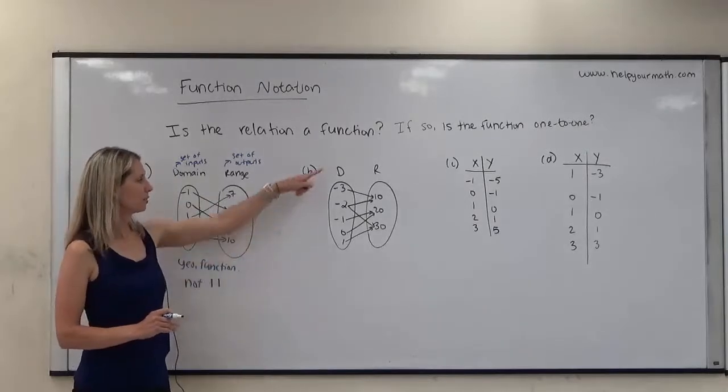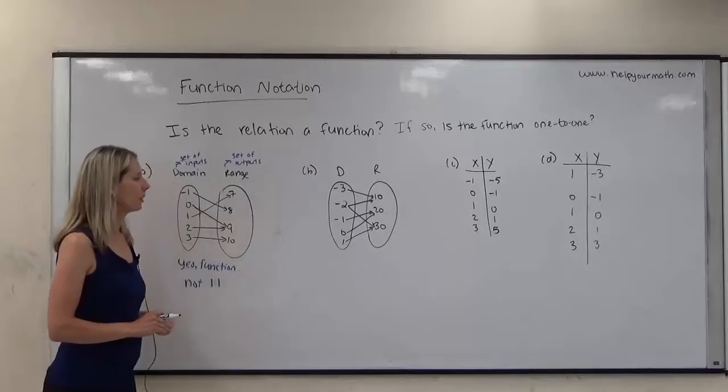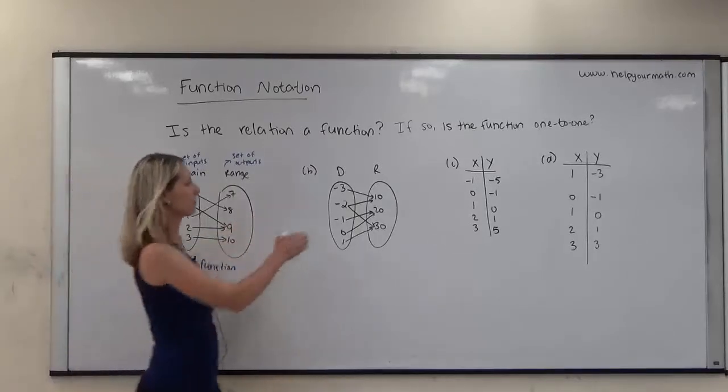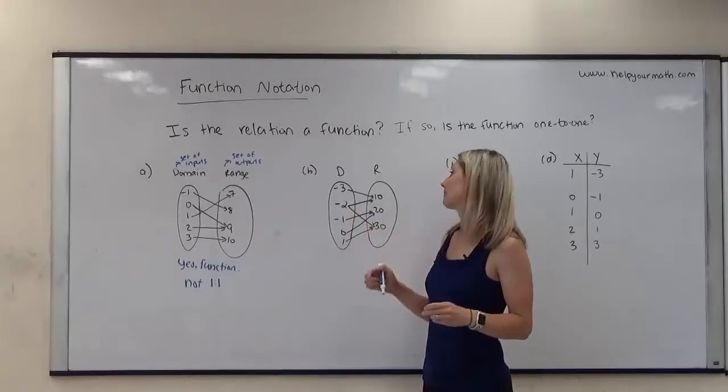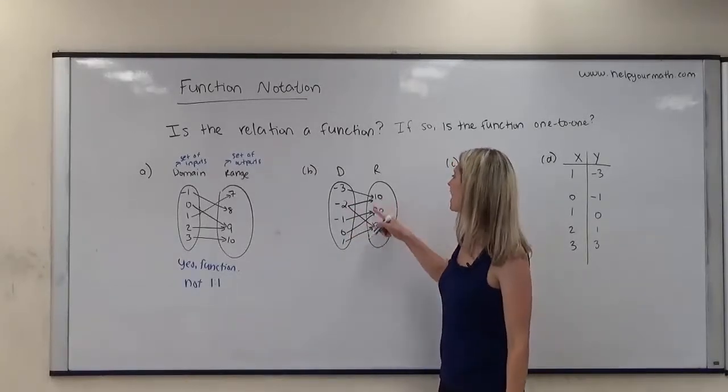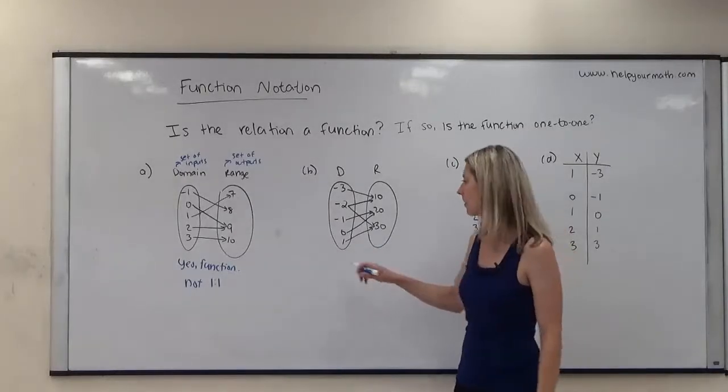Looking at letter B, the domain here, we have negative three, negative two, negative one, zero, and one. The range is 10, 20, and 30. So checking negative three, negative three maps to just one number. Negative two, however, it maps to both 10 and 30. We can stop there. We now know this relation is not a function.